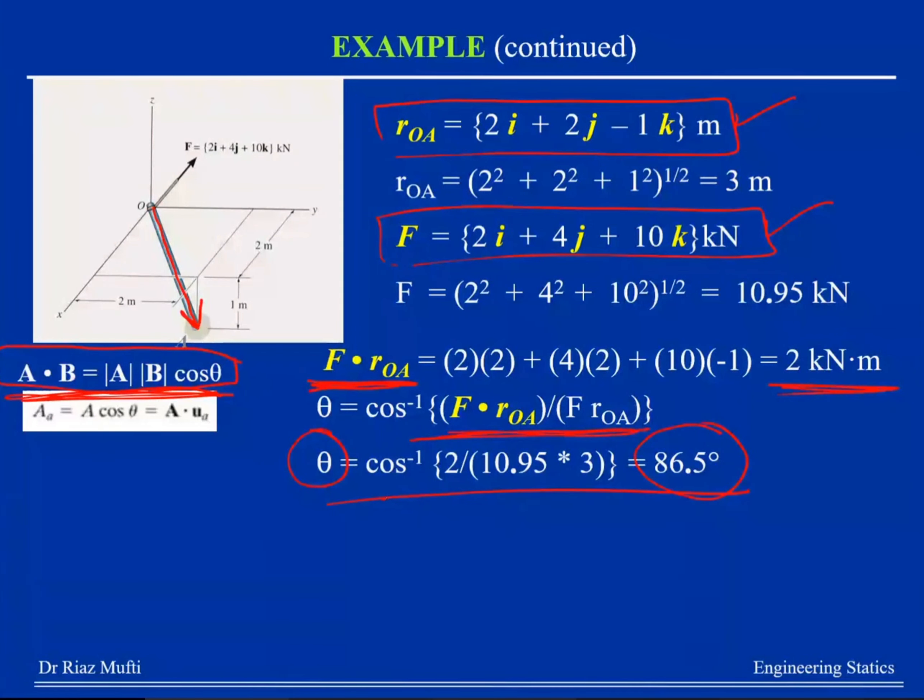Because what I've done is this. I can't write. I don't know what's happening now. Let me explain again. To do this dot product, I wanted my F in Cartesian vector form, which is already given. I wanted my ROA in Cartesian form, which I've got from the dimensions. I do F dot A, I get this out. So using this formula, I get my angle out. So now I've got my angle out.